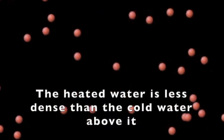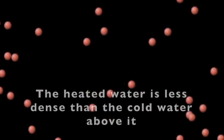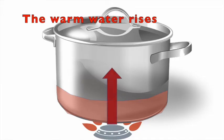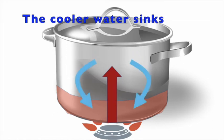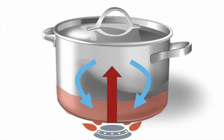As the water molecules near the bottom of the pan heat up, they move faster and faster and start spreading out. Because the water molecules are now farther apart, the heated water is now less dense than the cold water above it. The warm water rises and the cooler water above it sinks down to replace it.